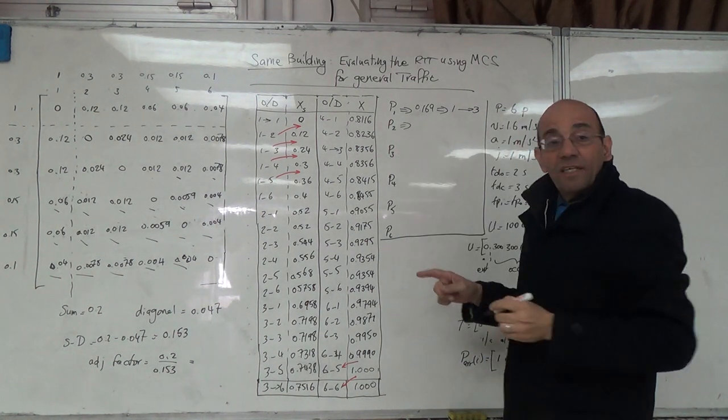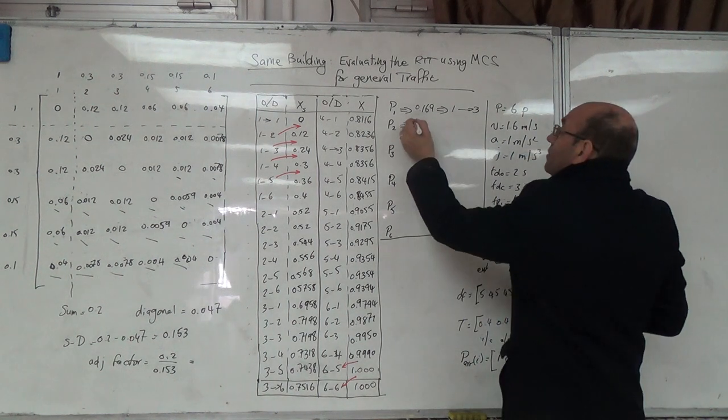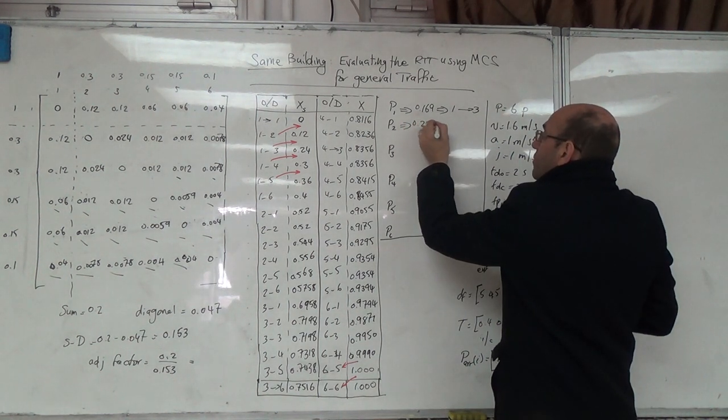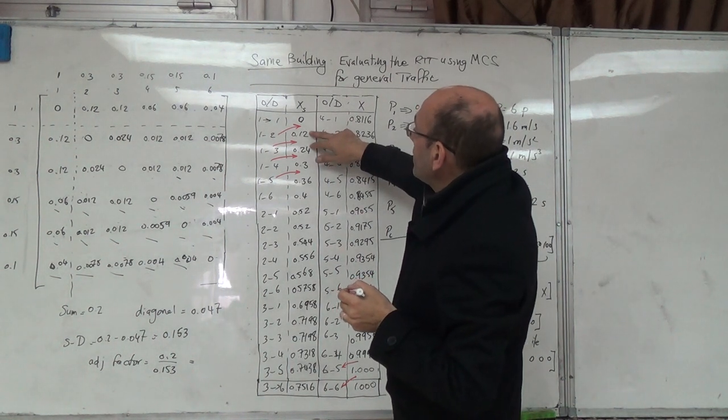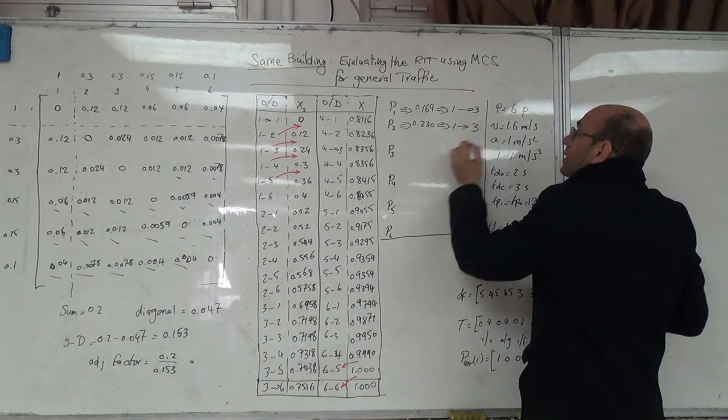The other number? 0.23. 0.23, it's going to be 1 to 3.